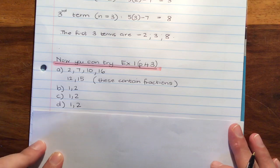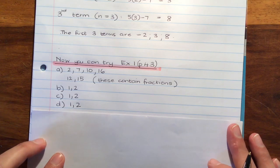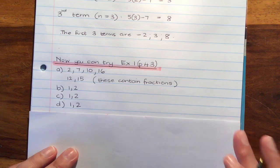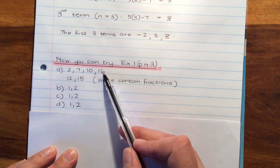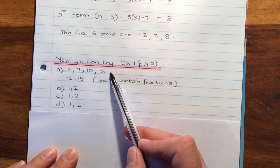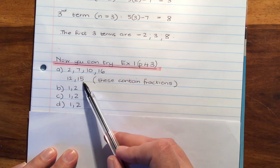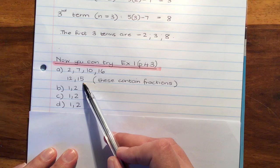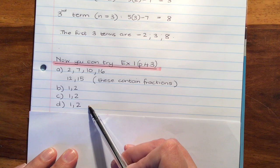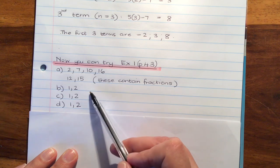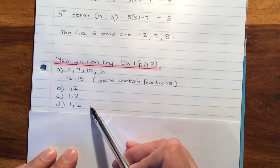Great, grade 10s, now you can try exercise 1 on page 43. I've selected a few for you to do. A, 2, 7, 10, and 16 are calculating the general formula, as well as 12 and 15, so that you can practice ones which contain fractions. Then B, C, and D are practicing the other kind of questions you can get.